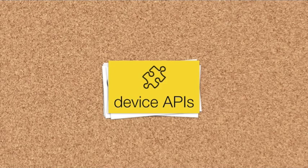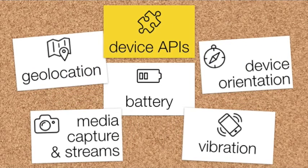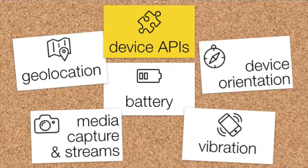First, let's start with device APIs. There are a number of device APIs that native apps have had access to for a long time, and now a lot of this has also landed in web browsers. Geolocation has been there for quite a while — you can use it inside your web app to fetch the user's location and present relevant info, like coffee shops nearby. The same for device orientation — you can make games that use the motion sensors on the device.